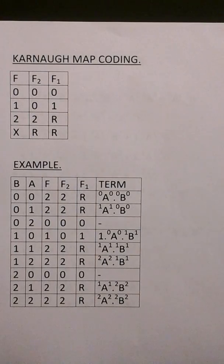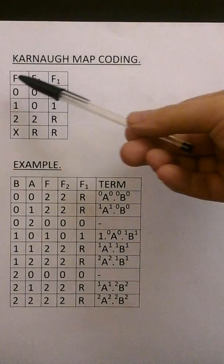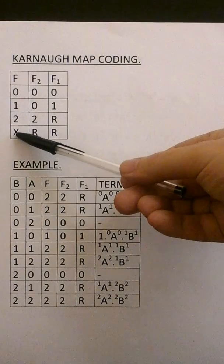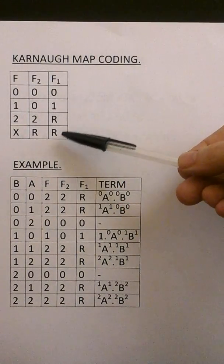So I said I'd be presenting a Karnaugh map method of minimization. Well, this is the Karnaugh map coding. We have the function F, 0, 1, 2 and a don't-care state for X. F2, Karnaugh map F2 and Karnaugh map F1.